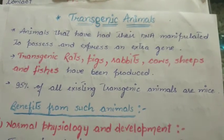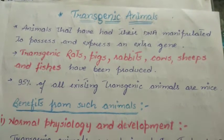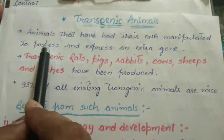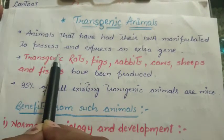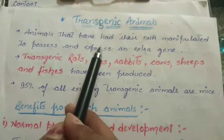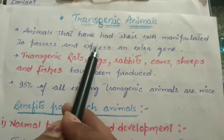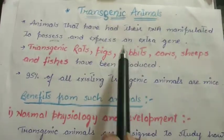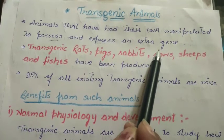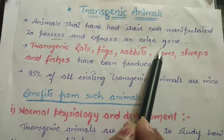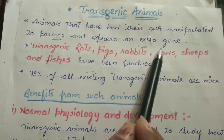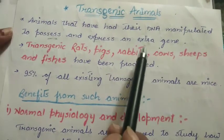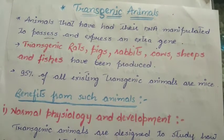Hello students, good morning. I am your educator Dolce and today we are going to start with our next topic: transgenic animals. Transgenic animals are the animals that have their DNA manipulated to possess and express an extra gene. Trans means new, genic means gene. If any new gene sequence is added into any animal, that animal is called a transgenic animal.